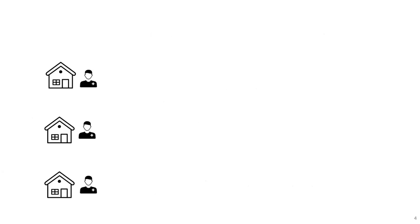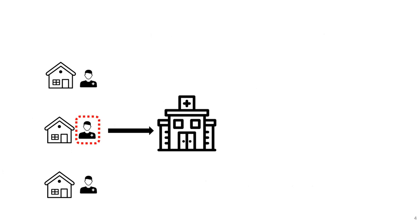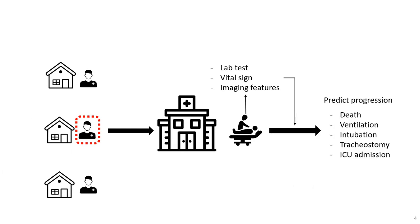Generally, if there is a COVID-19 patient admitted to the hospital, several variables are generated such as lab test results, vital signs, and imaging features, which can be used in predictive models. However, those variables are available only after the patient has undergone those tests, which can take some time. This leads us to a research question: how can we make predictions early?